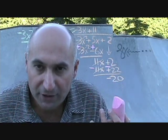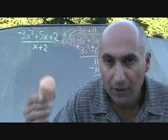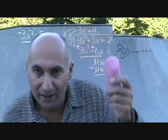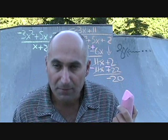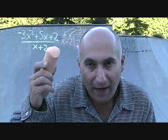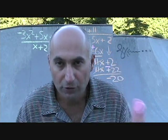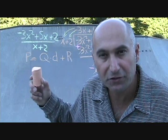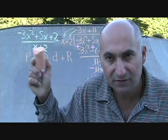You stop doing long division as soon as the power of the current term is less than the power of the first term in your divisor. For example, if your divisor started with x squared and you're down to an x term, you stop. Once the power of the first term in the denominator is bigger than the power of where you've gotten to, you're done. Now we write this in the form of the division statement: P equals Q times D plus R, where P is the numerator, Q is the quotient, D is the divisor, and R is the remainder.